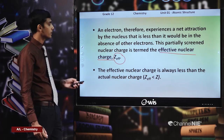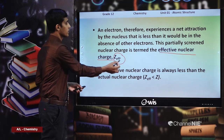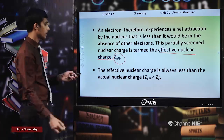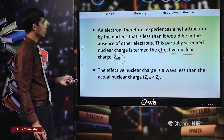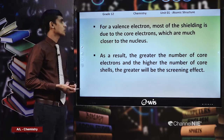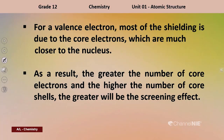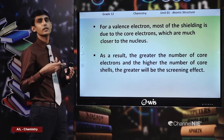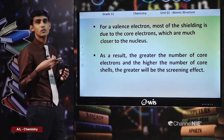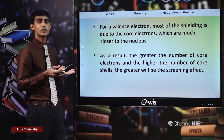For a valence electron, most of the shielding is due to the core electrons which are much closer to the nucleus. As a result, the greater the number of core electrons and the higher the number of inner shells, the greater will be the screening or shielding effect. Shielding effect increases when the number of inner electrons and inner shells increases.